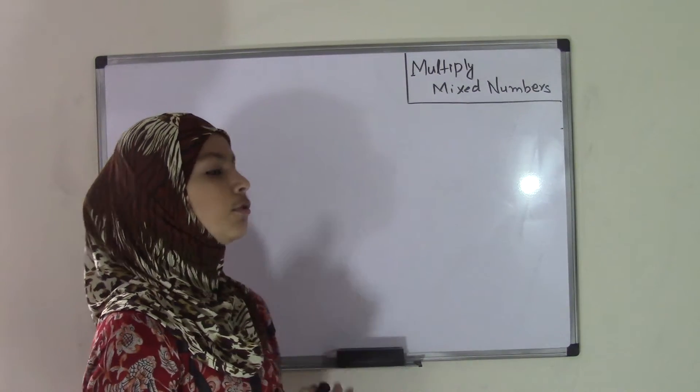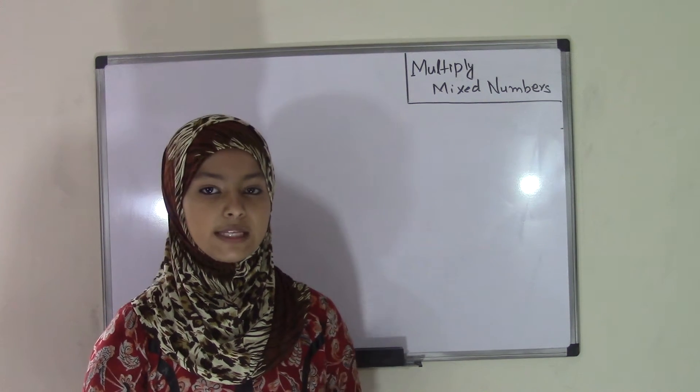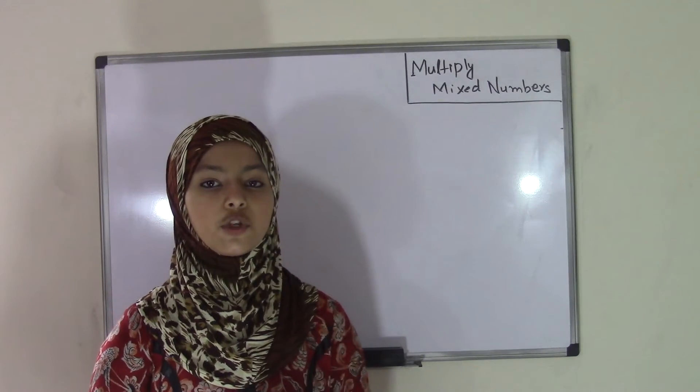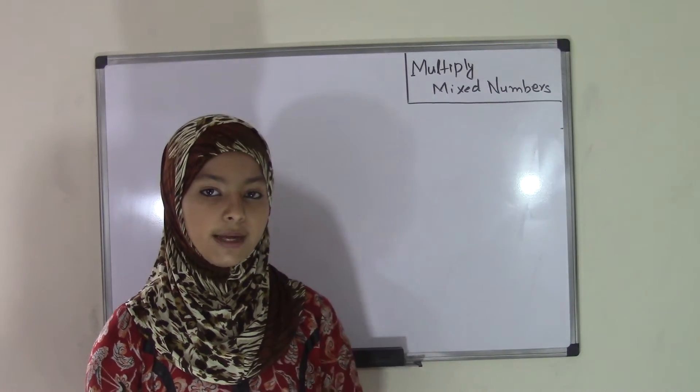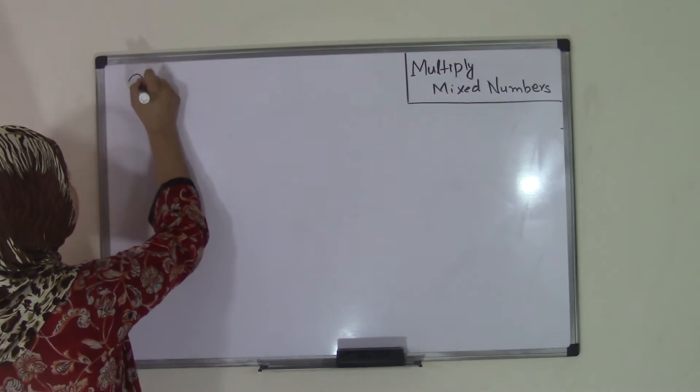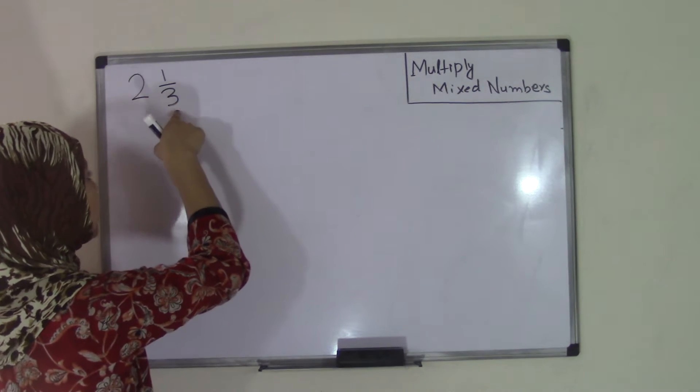Now, before we get started, what is a mixed number? Well, from our previous videos, we know that a mixed number is just a whole number and a fraction combined. So an example for a mixed number could be 2 and 1/3, because 2 is a whole number and 1/3 is a fraction.